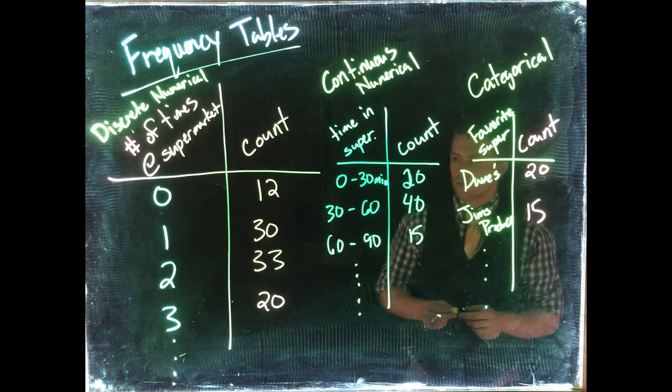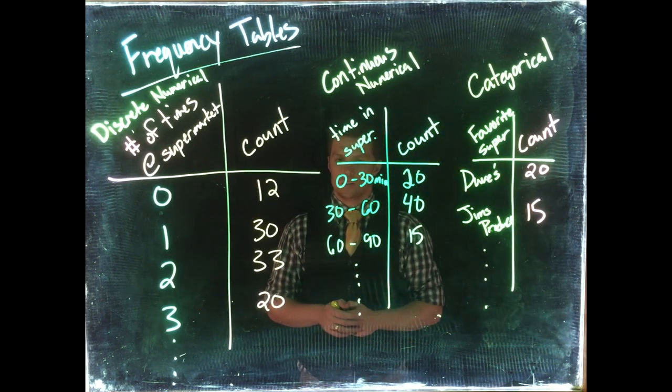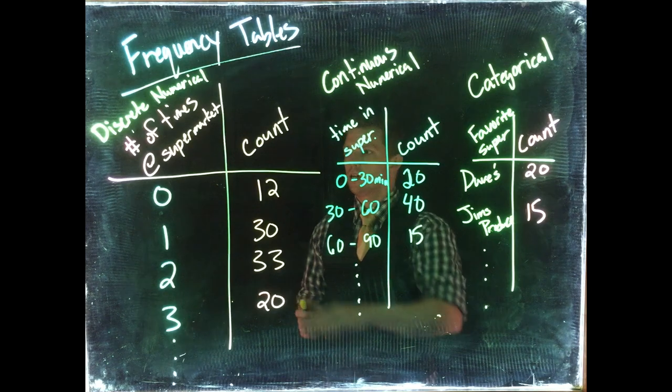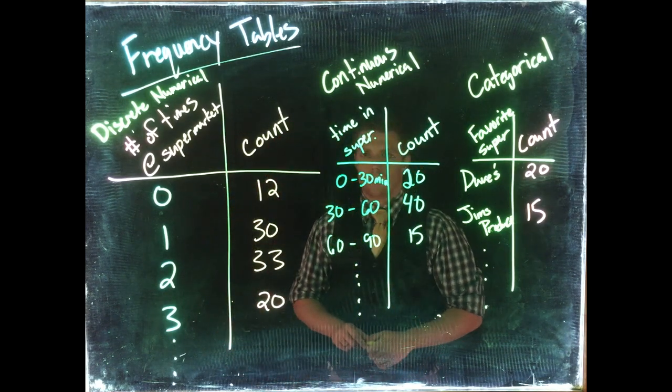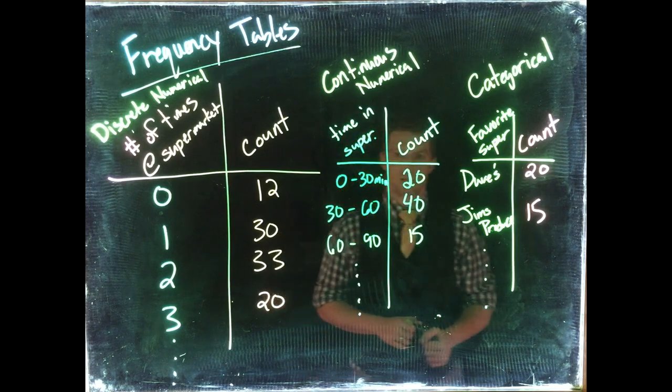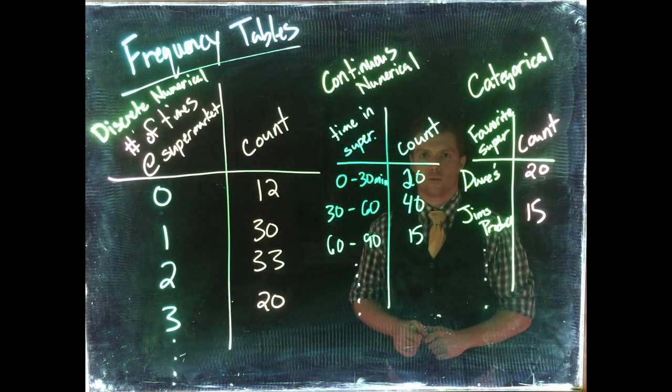So, kind of in recap, we use the frequency tables to tell us how often events occur, and we can organize them in these tables that help reveal some of the patterns more easily than just looking at the raw data itself.